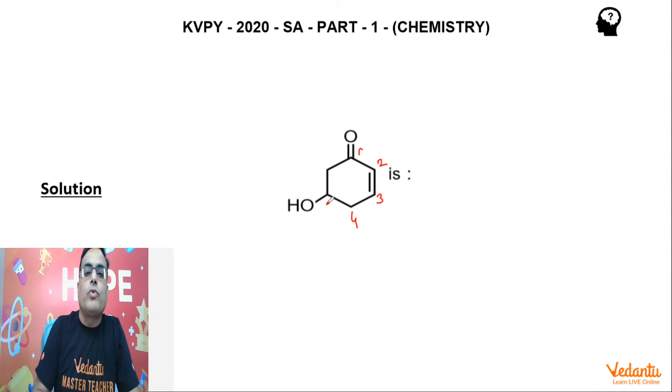1, 2, 3, 4, 5, 6. Now carbon number 5 of the parent chain is having one hydroxy group, right?